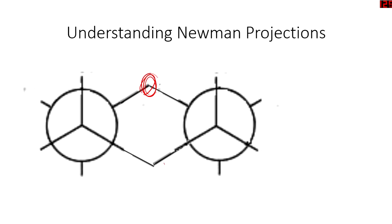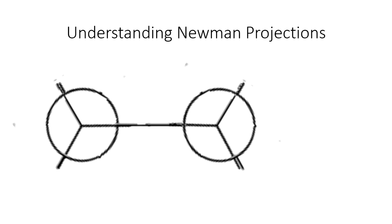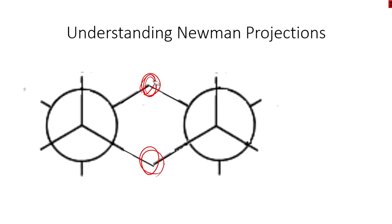And the one up, in this case, is in the back, and the one down is in the front. And now we can have rotations, or as some like to call them, ring flips.